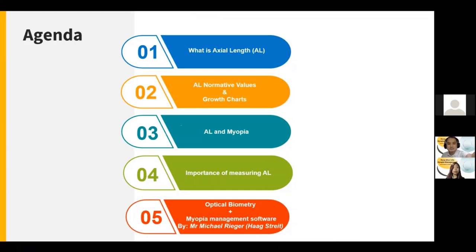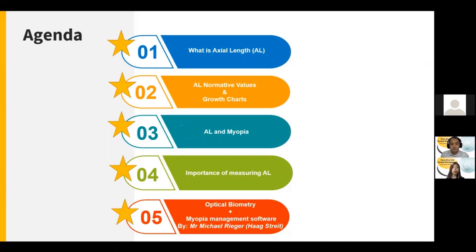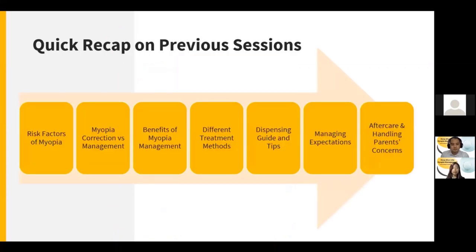So this is the agenda for today. Firstly, I will talk about what is axial length and what are the normative values that we can look out for, and some growth charts that have been done by research. After which, the relation between axial length and myopia, and of course the importance of measuring axial length. To end the session, we have a special guest speaker who will be speaking on optical biometry as well as myopia management software that can help you in your practice. As a quick recap on our previous sessions, we have covered prevalence, risk factors, differences between myopia correction versus myopia management, the benefits of myopia management, different treatment methods available, some dispensing tips, as well as managing expectations of parents and aftercare.